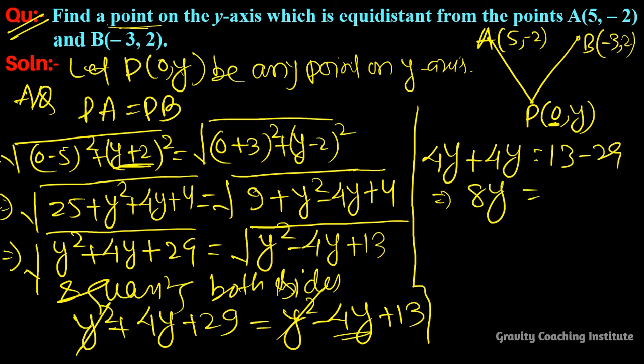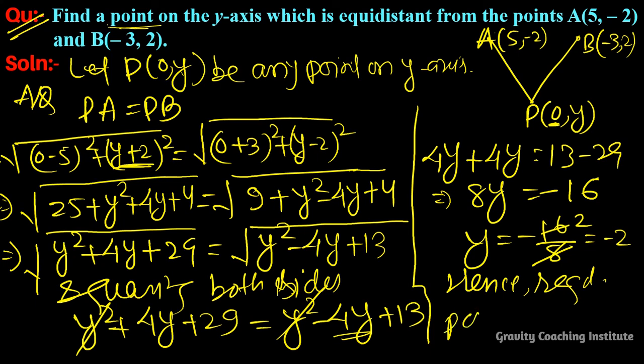So y = -16/8, which simplifies to y = -2. Hence the required point is (0,-2). Answer.